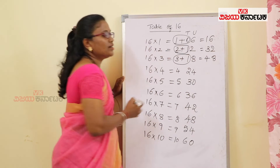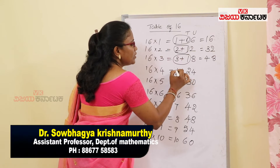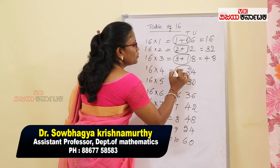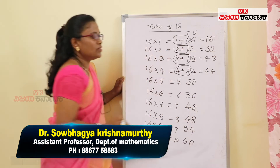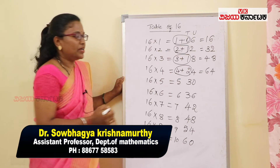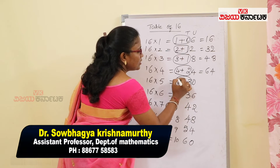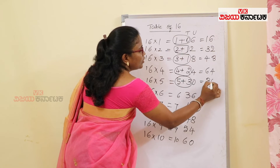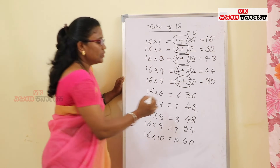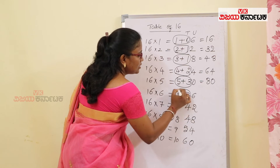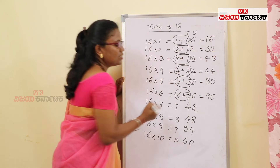We will add the 8th place. So, we will add: 5 plus 2 is 6. I will add the 8th place as it is. Now, we will add the 10th place. We will add the 8th place. Now, we will add the 9th place.